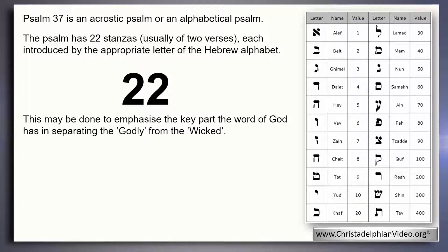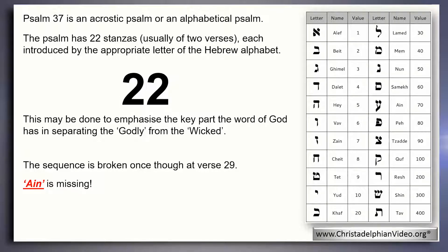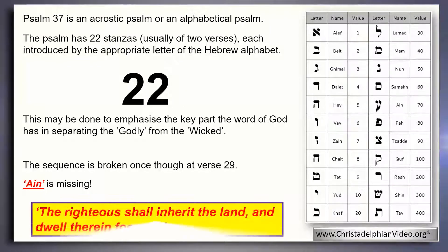Those who don't will despise it. The sequence is broken at verse 29, which causes all sorts of issues for Bible students including myself. The next words associated with verse 29 — we would expect the Hebrew letter 'ayin' — that's missing. But what we do get is: 'the righteous shall inherit the land and dwell therein forever.' And if there's a main message coming out of the whole psalm, it's that.